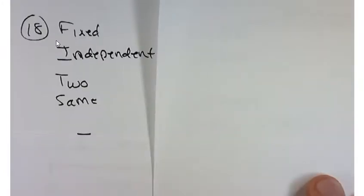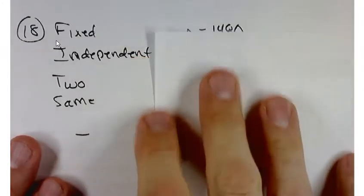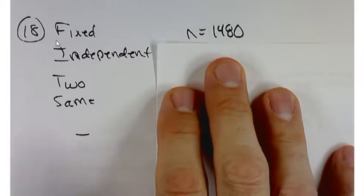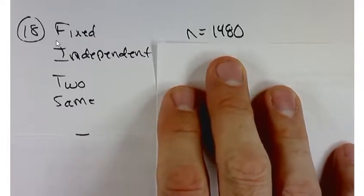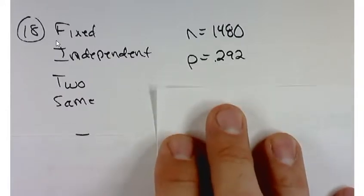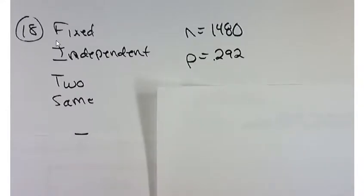So we want to see, do we have a fixed number of trials? Well, yeah, 1480. Are they independent? Sure. If somebody sleepwalks, it doesn't affect the probability that you sleepwalk. Two outcomes? Yeah, sleepwalked or not? Good. Yes or no? Same probabilities.